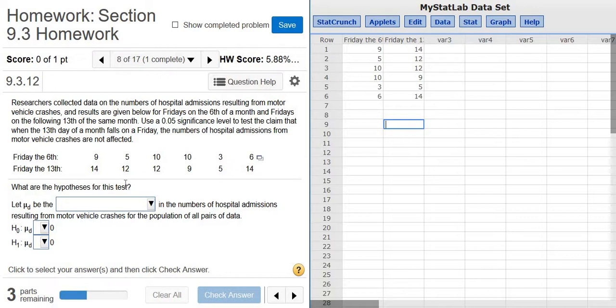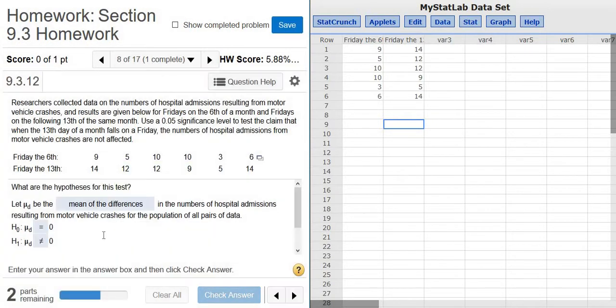It says, what are the hypotheses for this test? So let mu sub d be the mean of the differences in the numbers of hospital admissions. And then it's always equals here, and we just want to see if there's a difference, so we just put not equal to. That was pretty easy.